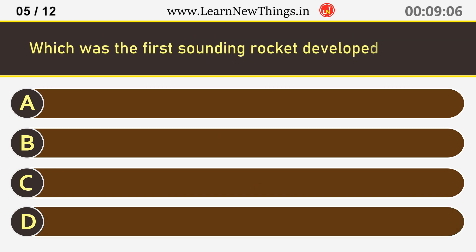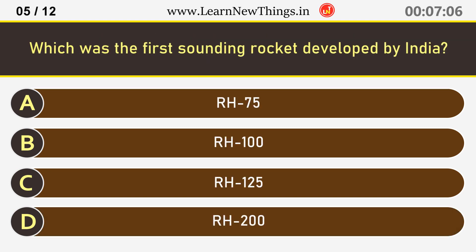Which was the first sounding rocket developed by India? RH-75.